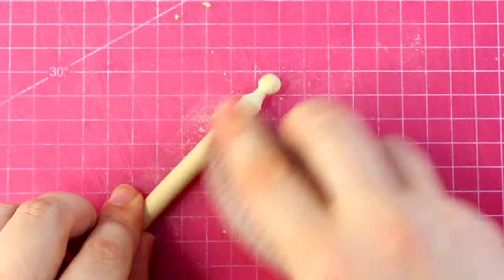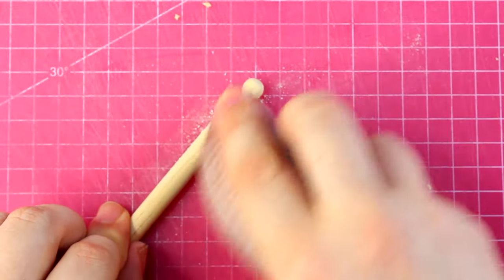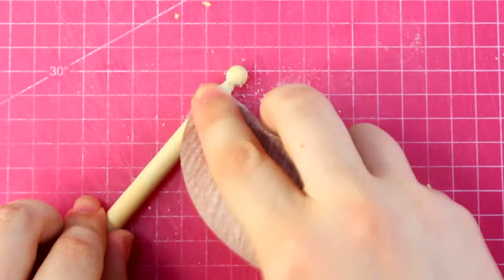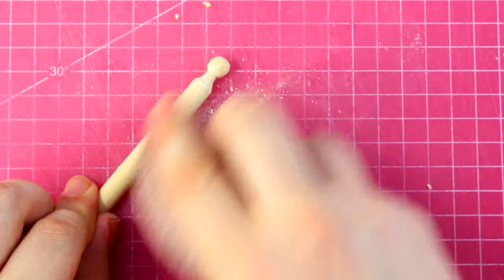Don't forget to sand the rest of the dowel, even the parts you didn't carve. Often dowels are shaped under a little bit of pressure. They go through a machine and they're carved into that shape but they're also squeezed a little bit.